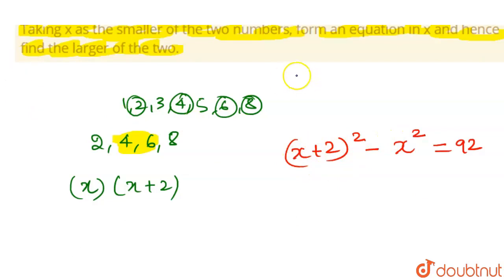Now opening this using the identity (a+b)² = a² + b² + 2ab. This will become x² + 4 + 2 times 2, that is 4x, minus x² equals 92.